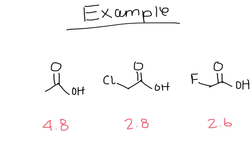Now we will do an example of what I have just explained. On the left, we have just a carboxylic acid, which has a pKa of 4.8. In the middle, we have a carboxylic acid with a chlorine attached to it, which has a pKa of 2.8. And finally, over here all the way to the right, we have a carboxylic acid with a chlorine connected to it, which has a pKa of 2.6. As one can see, the further right you go, the lower the pKa, and the stronger the acid, the lower the pKa it is going to have. This is just one of the many examples that shows how the more electronegative an atom is, the stronger it will make the acid.